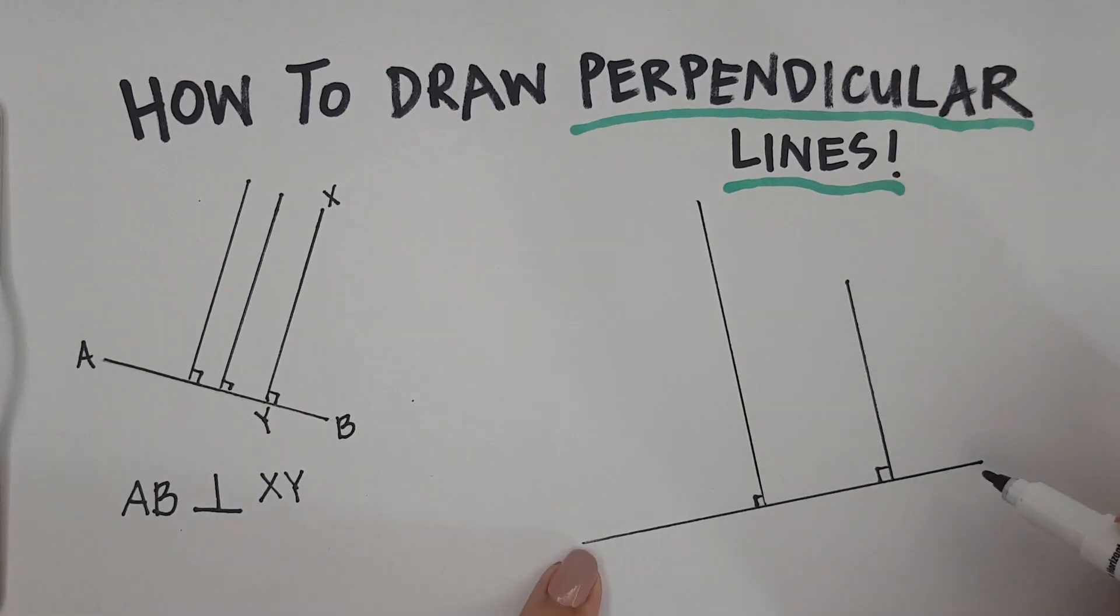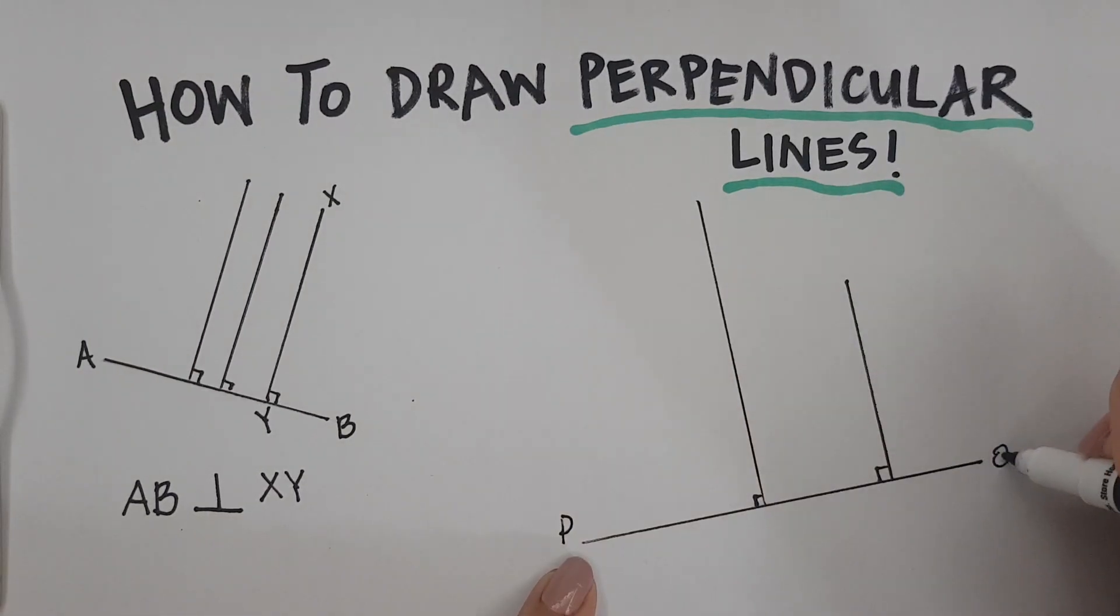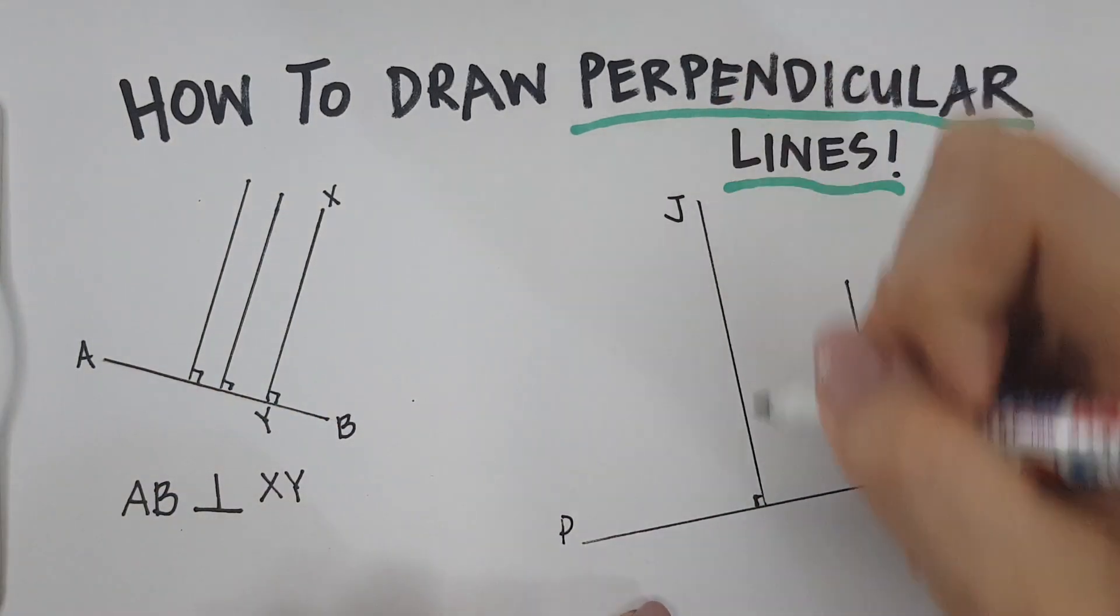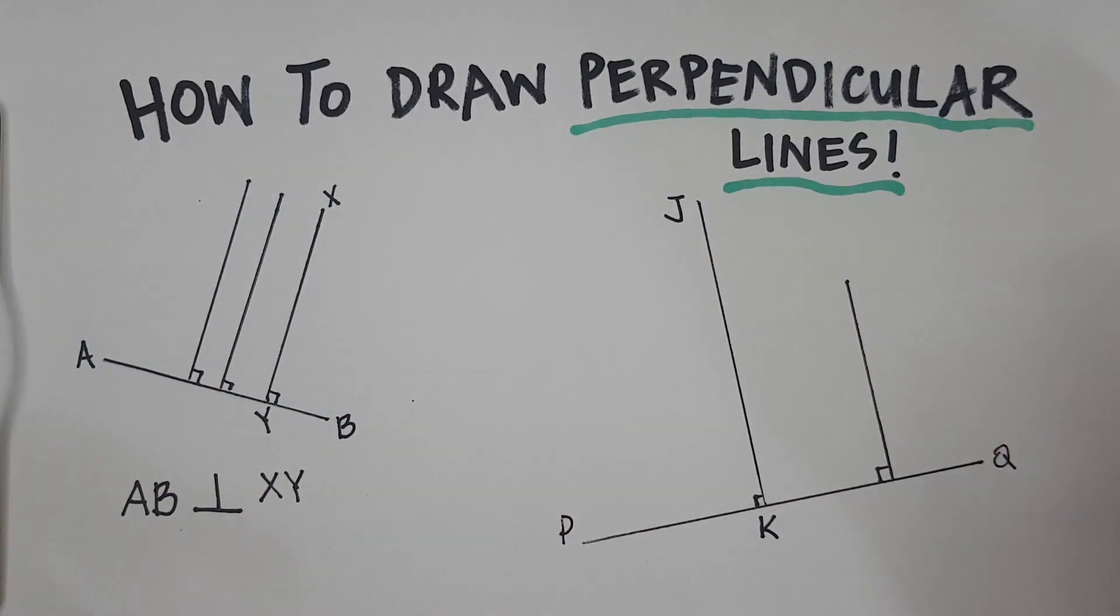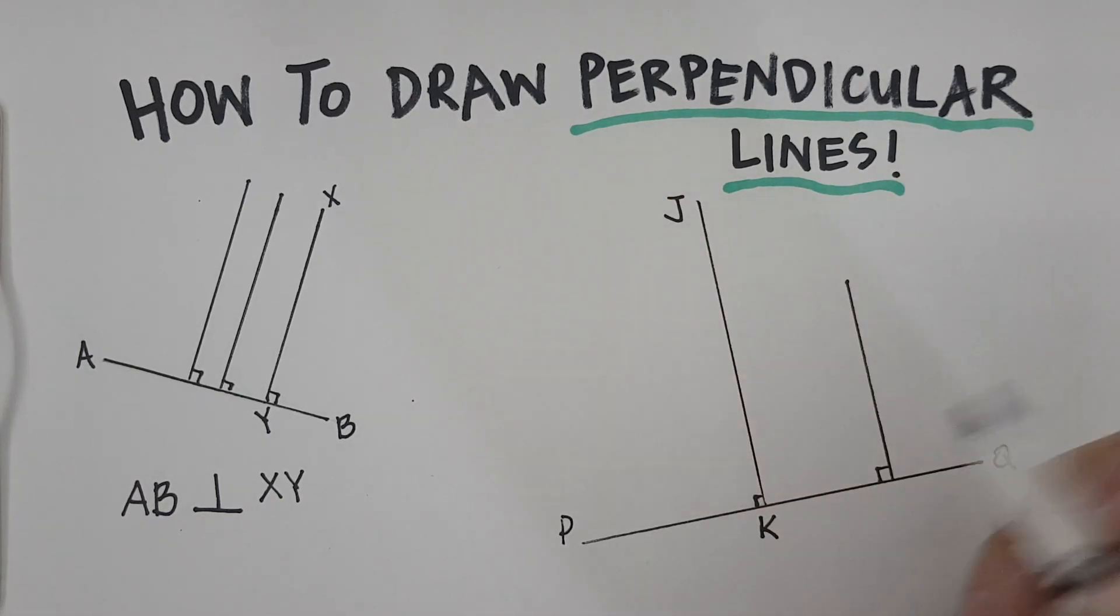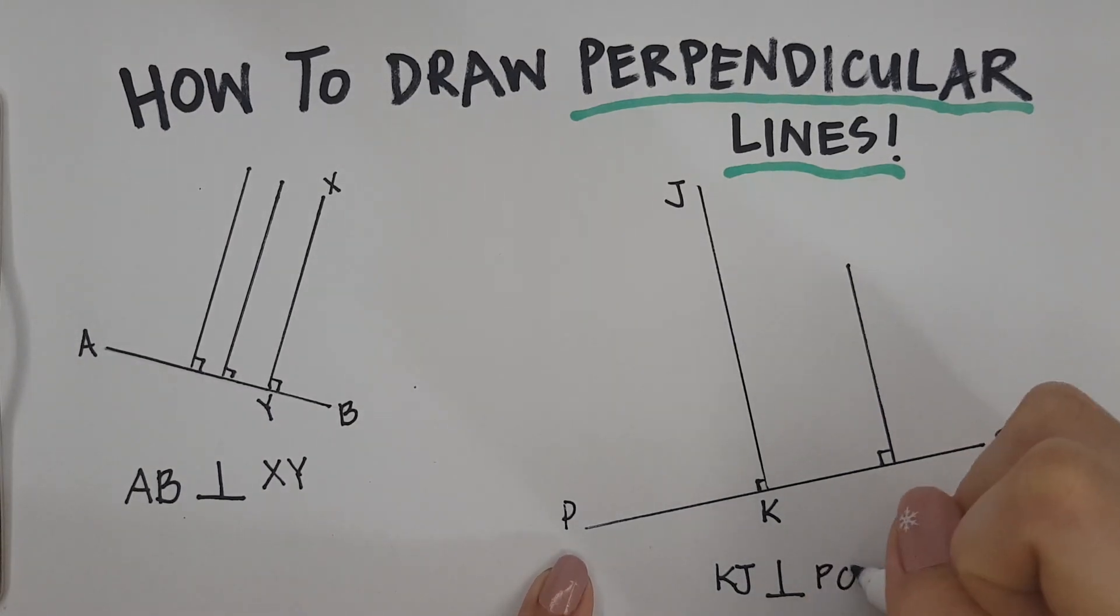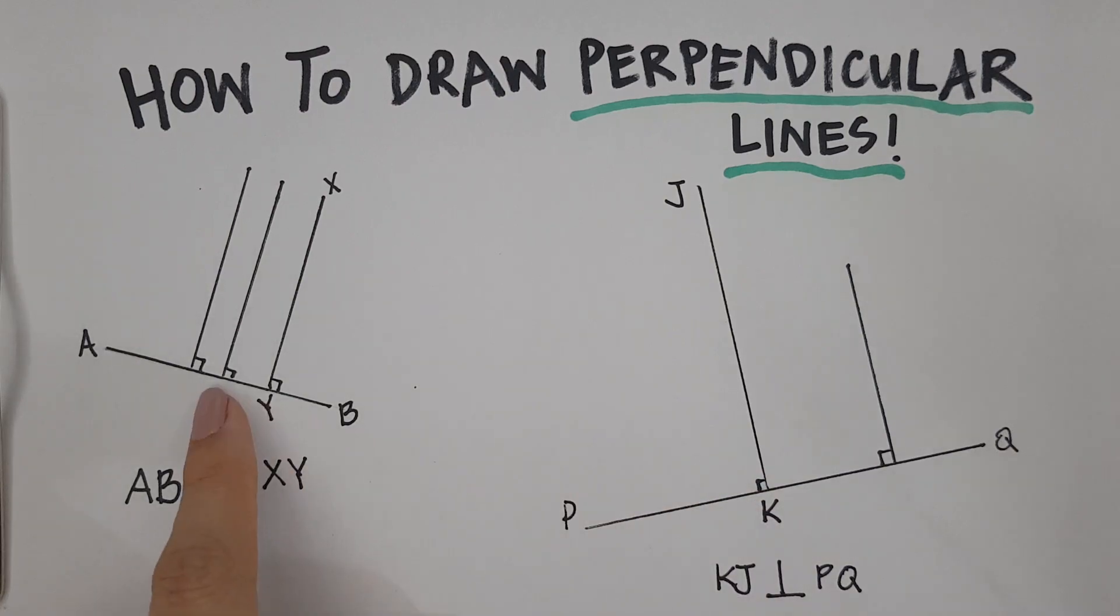Let me name this. If this first line that I drew is PQ, and this line is JK, then I can write. It doesn't matter if you say JK or KJ, it's the same line. So, I'm going to write KJ is perpendicular to PQ. And that's how you draw perpendicular lines. Remember, perpendicular lines meet at right angles.